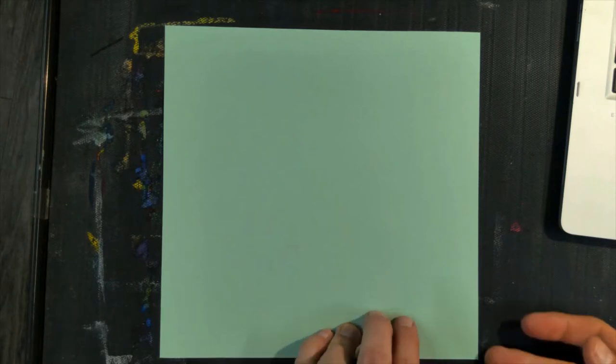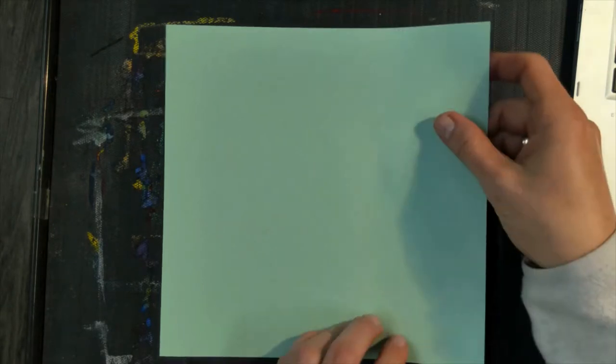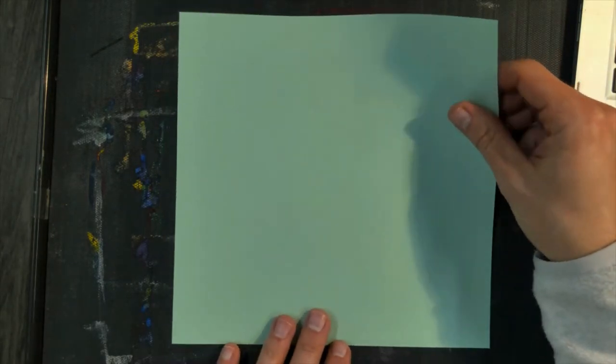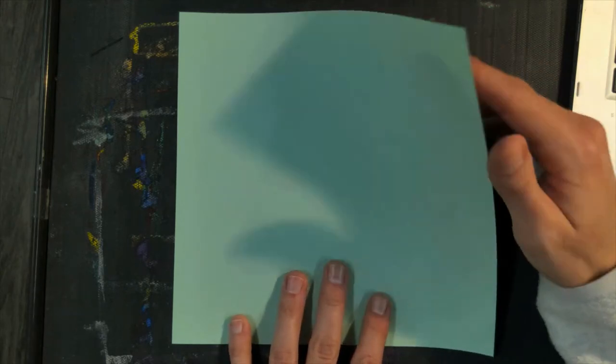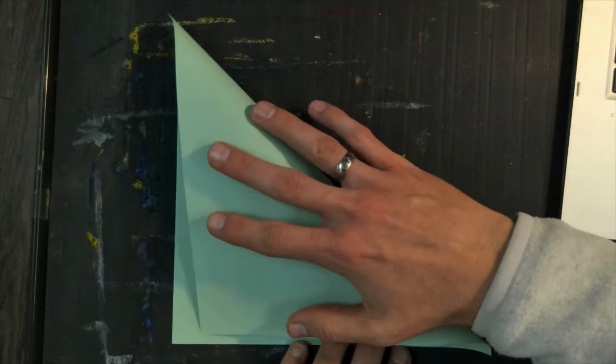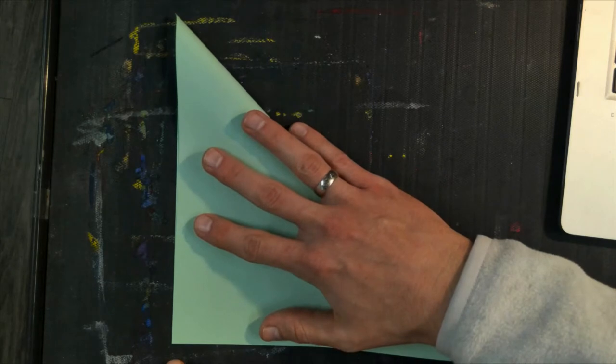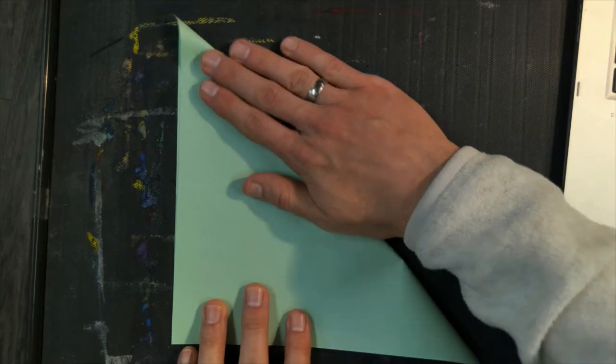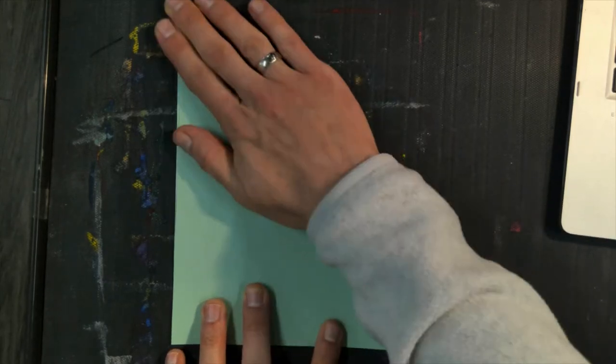So I've traded my white paper in for a green paper, because we are going to be making an origami frog that really jumps. Pretty cool. So to get started, take your green square, or whatever color paper you have, and fold it straight across, and meet up the two corners like this, and push down the diagonal side like that.